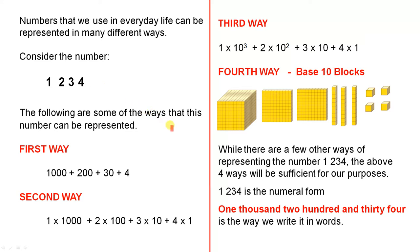The following are some of the ways that this number can be represented. The first way is 1000 plus 200 plus 30 plus 4. The second way is 1 times 1000 plus 2 times 100 plus 3 times 10 plus 4 times 1.